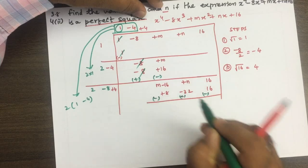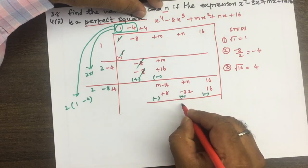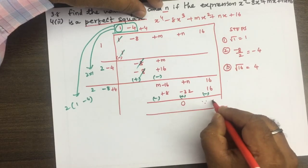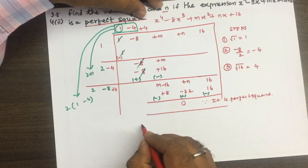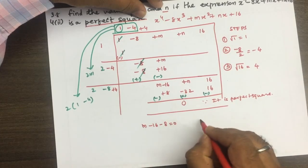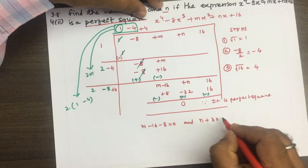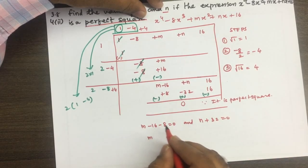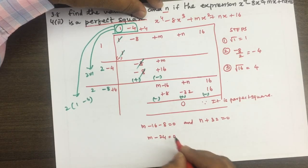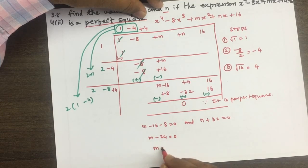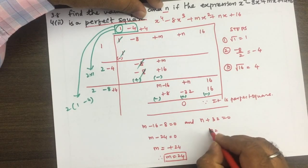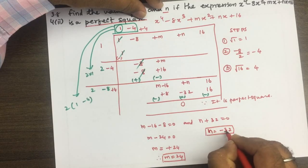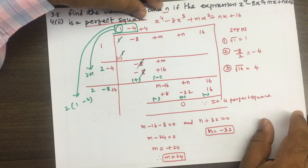Plus है तो minus होगा, minus है तो plus। क्योंकि perfect square है इसलिए remainder zero मिलेगा। इसलिए m minus 16 minus 8 equal to 0 होगा और n minus 32 equal to 0 होगा। So m equal to 24, therefore m equal to 24। And n equal to minus 32, therefore n equal to minus 32। We find m and n — दोनों का value find कर लिया है।